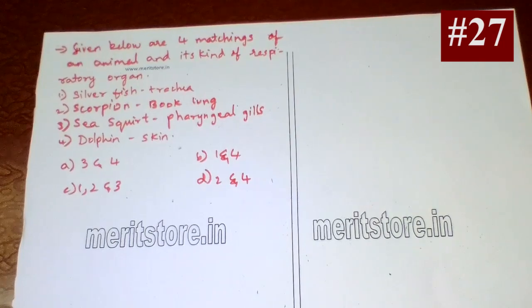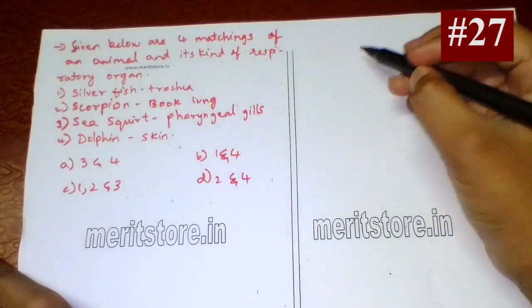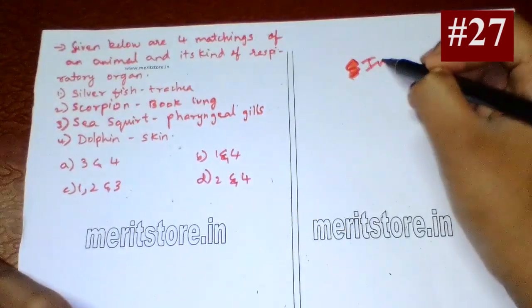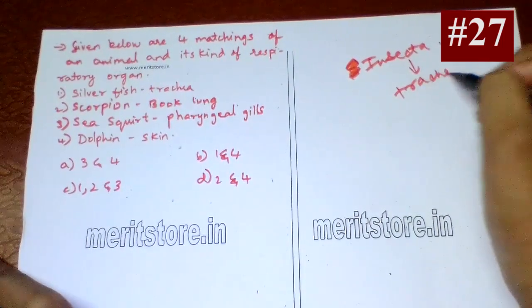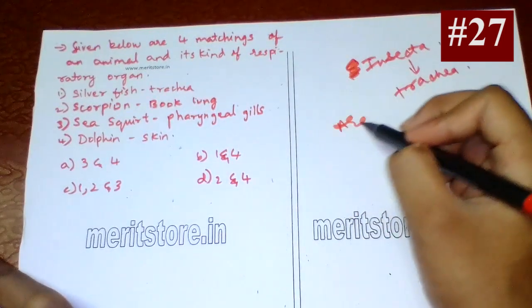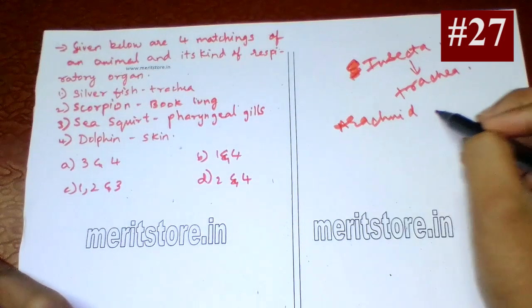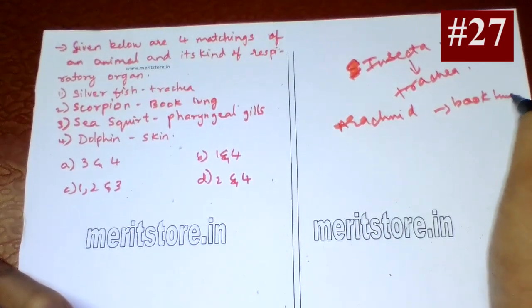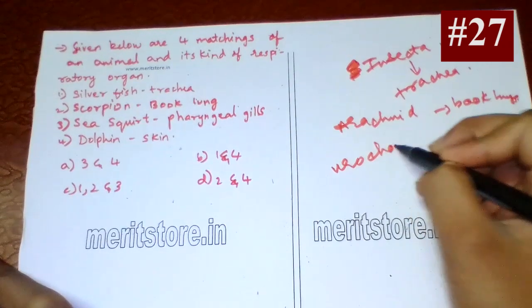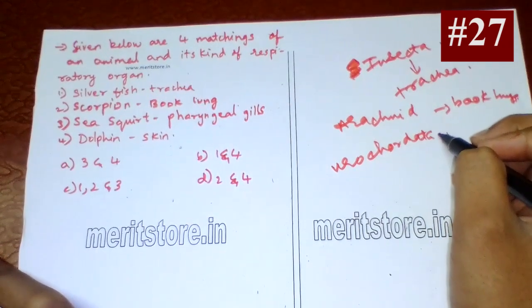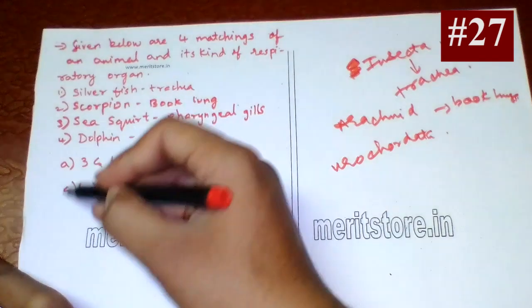Matching animals with their respiratory organs: Silverfish belongs to class Insecta, with trachea as the respiratory organ. Scorpion belongs to Arachnida, with book lungs. Squid has pharyngeal gills. So option C is the correct answer.